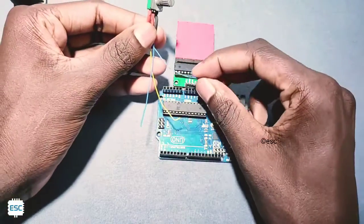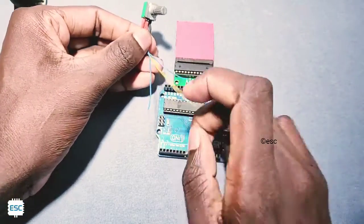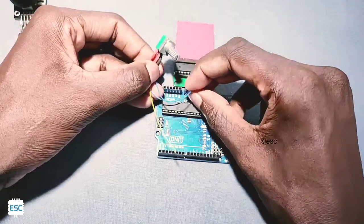Now let's connect the variable resistor: VCC to 5 volt, ground to ground, and analog out to pin A3 of the Arduino.